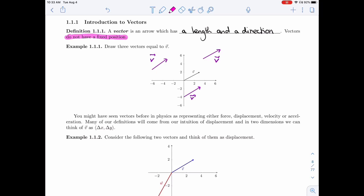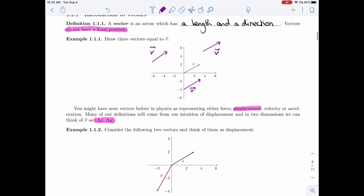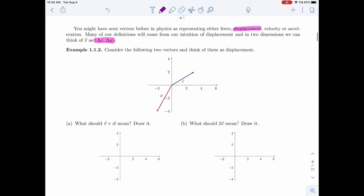So you may have seen vectors before, especially in physics. In physics, they use it to represent force, displacement, velocity and acceleration. Many of our definitions in this chapter will come from intuition of displacement. In two dimensions, we can think of V as a change in position. So a change in X and a change in Y. Alright, so together those two pieces of information will tell you your entire displacement.